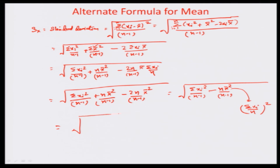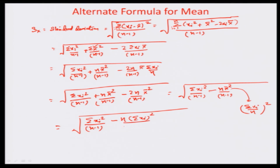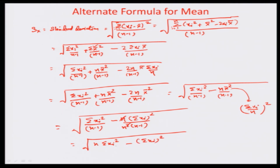This simplifies to sigma x_i squared by n minus 1, minus n times sigma x_i whole squared divided by n squared times n minus 1. Finally, we get n sigma x_i squared minus sigma x_i whole squared, divided by n times n minus 1. This formula actually simplifies the calculation.